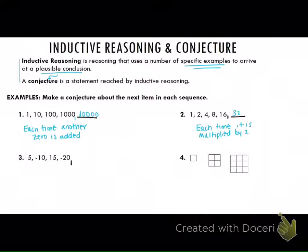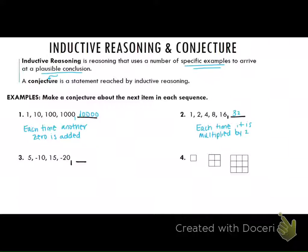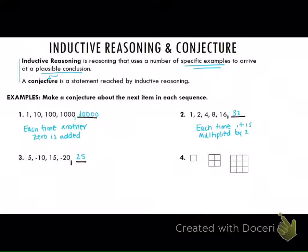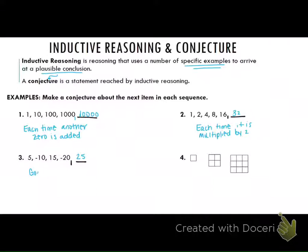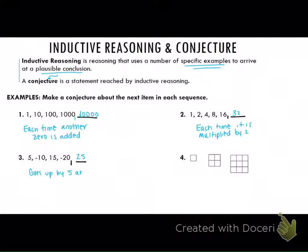Hunter, what is your conjecture about number three? And why did you decide it was 25? It's going up by five, but also flipping signs every other one. So it goes up by five and flips signs every other one.